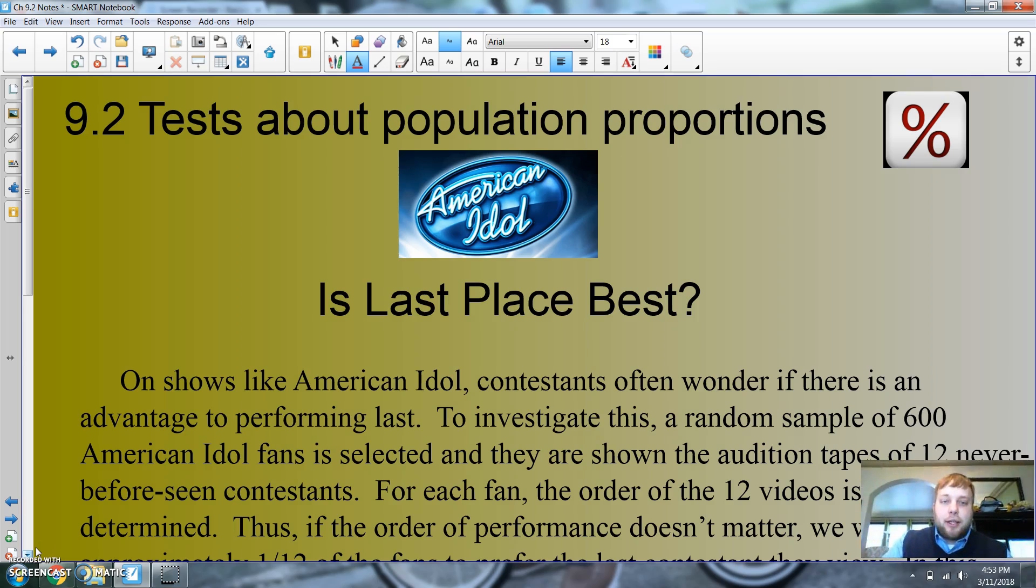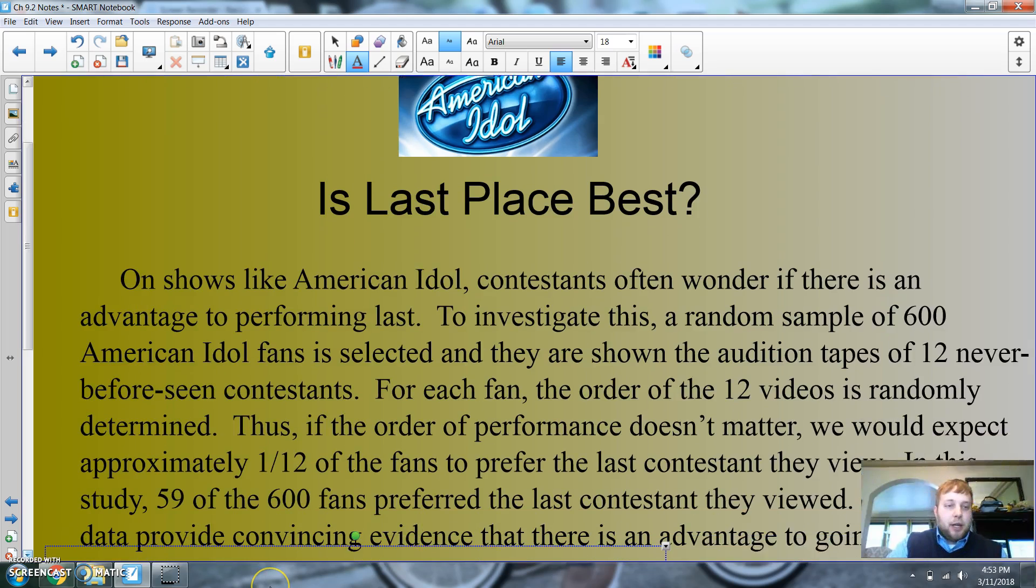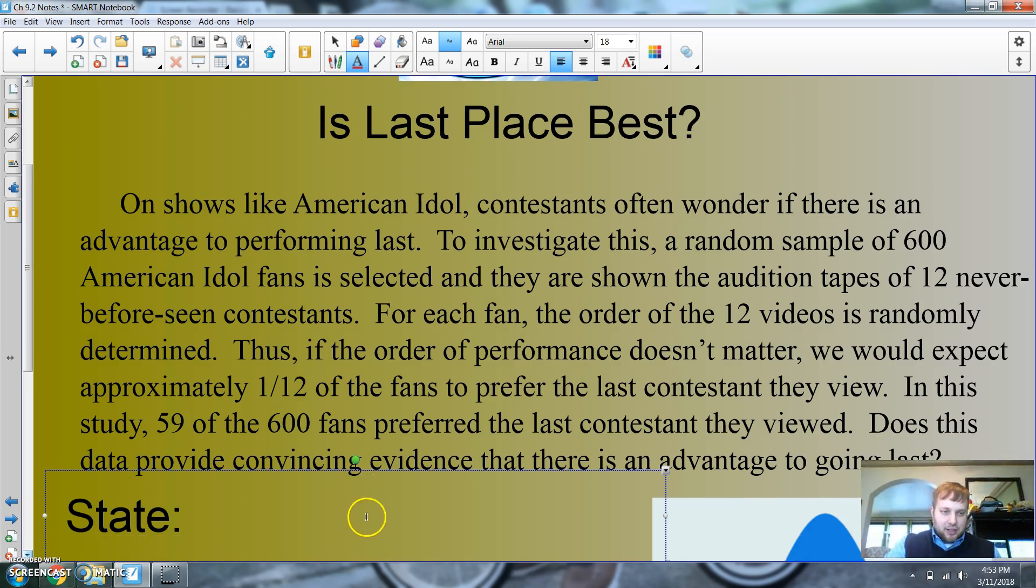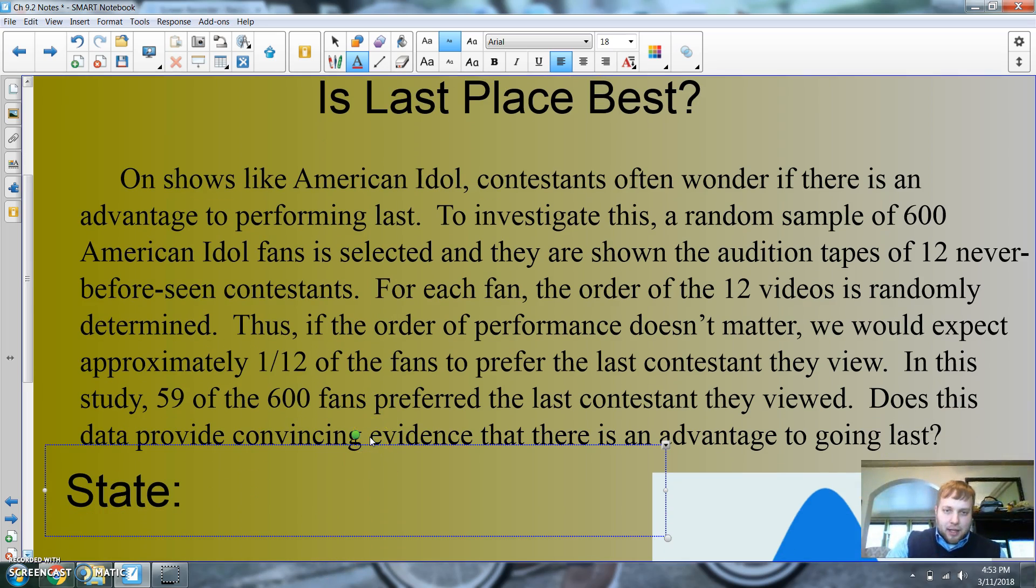On shows like American Idol, contestants often wonder if there's an advantage to performing last. Obviously, those people who perform first or last always have an advantage. To investigate this, a random sample of 600 American Idol fans is selected. They are shown the audition tapes for 12 never-before-seen contestants. For each fan, the order of the 12 videos is randomly determined.